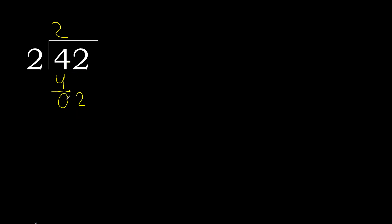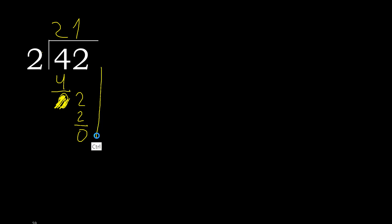Eliminate 0 on this side. 2. 2 multiplied by 2 is 4 — is greater. Multiply by 1 is 2. 2 minus 2 is 0. And here that is not a number, therefore finish it. 42 divided by 2 is 21.